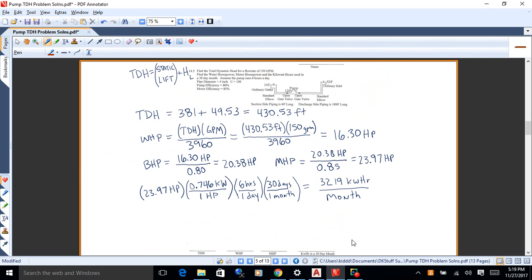Now we get the TDH, total dynamic head. You just take the lift, which is 381, plus the head loss, 49.53, you get 430.53 feet.